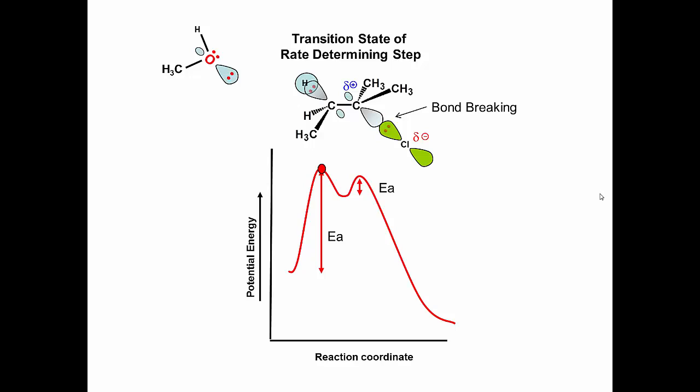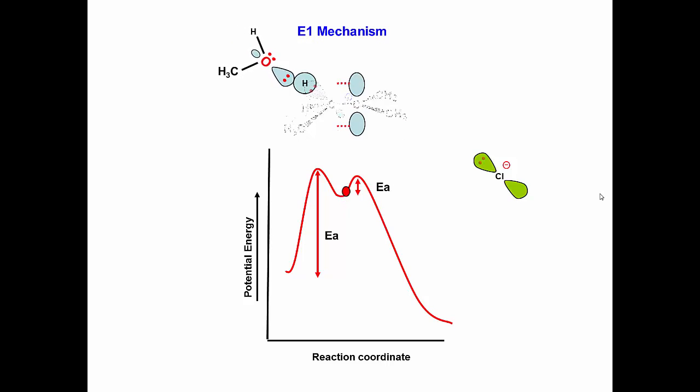In the second step, the solvent abstracts a hydrogen atom. The electrons from the carbon hydrogen sigma bond delocalize to form the pi bond of the alkene.